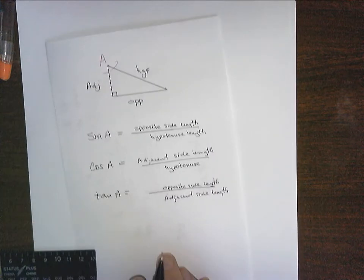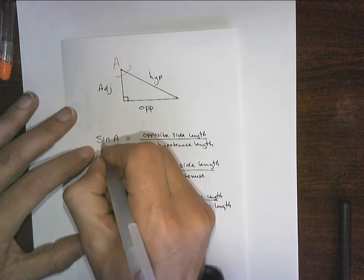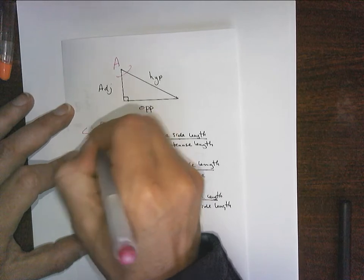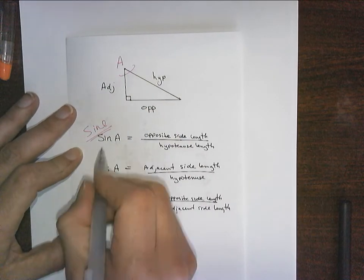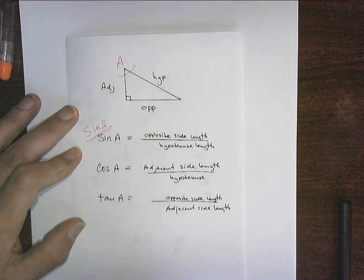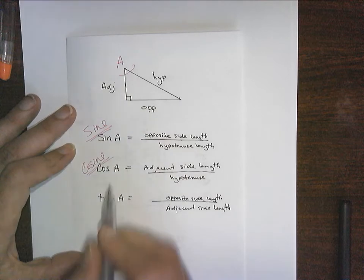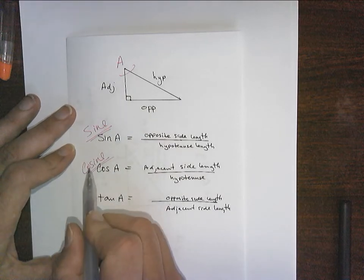Now as I said, mathematicians are notoriously lazy. The proper name for this is sine, S-I-N-E. We shorten it to S-I-N. You do not pronounce this as sin. This is sine. Cosine is the proper way of saying cos. It's cosine.